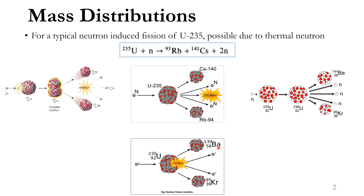For the mass distribution of these major fragments, we expect a symmetric mass distribution about a maximum, since corresponding to each heavy fragment there is a light one to compensate the remaining mass. In all cases there are heavy fragments and the compensating light fragments, so we expect a symmetric pattern.